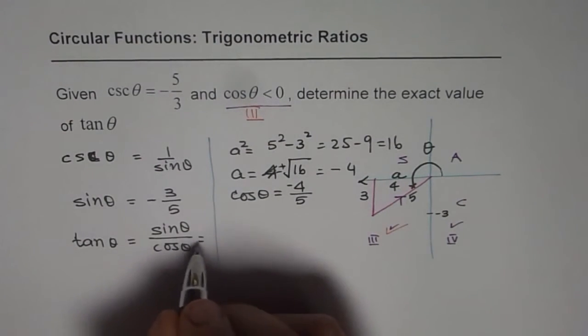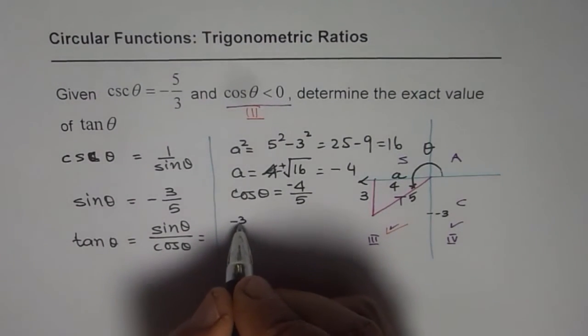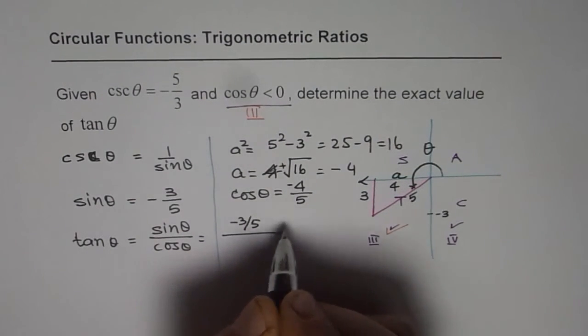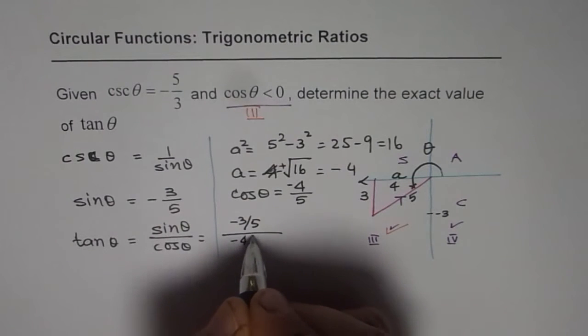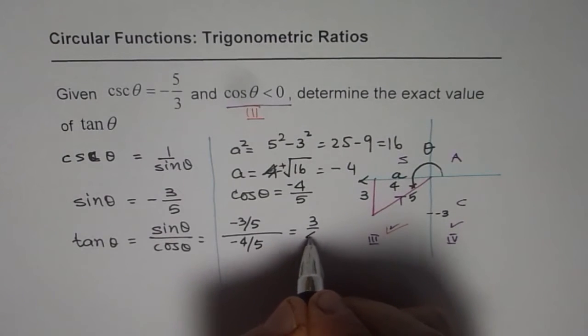So we have tan theta equals to sine theta over cosine theta. Sine theta is negative 3 over 5, so it is negative 3 over 5. And cosine theta is negative 4 over 5. So that gives you the value of tan theta as 3 over 4.